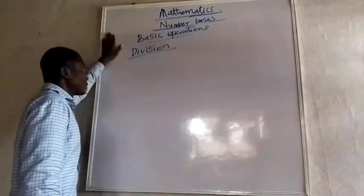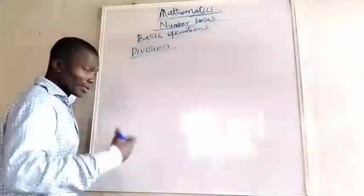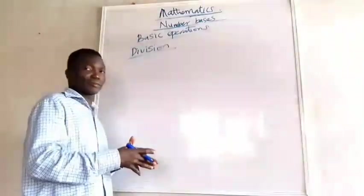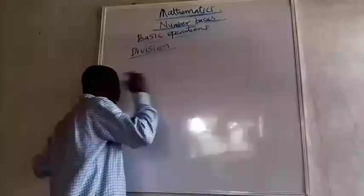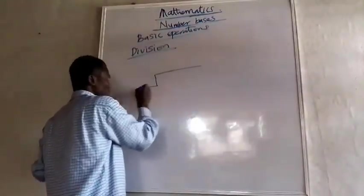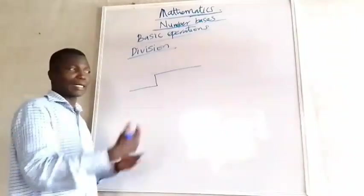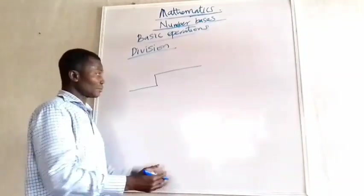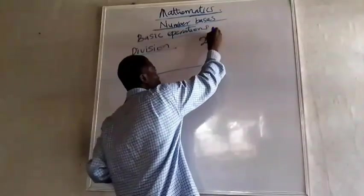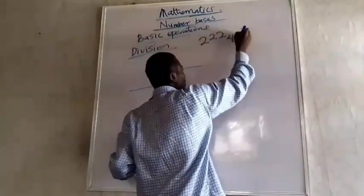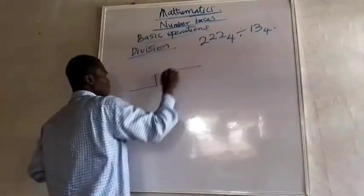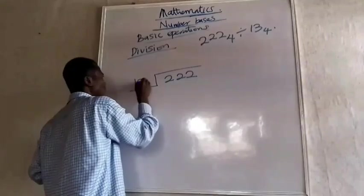Now let's talk about division under different bases. Just like in base 10, division in other bases considers the number base. I would advise you to always use long division to work it out, because there are remainders involved and this method is easy to handle. Let's say I want to divide 222 base 4 by 13 base 4.